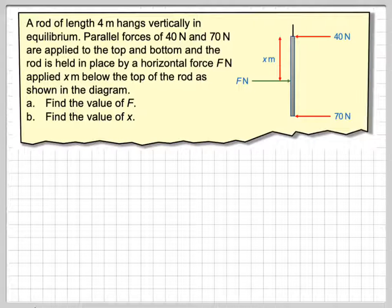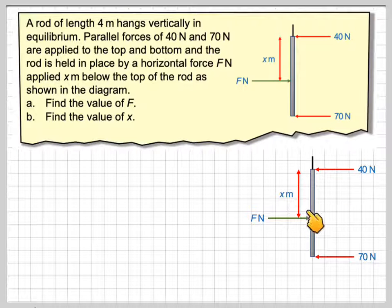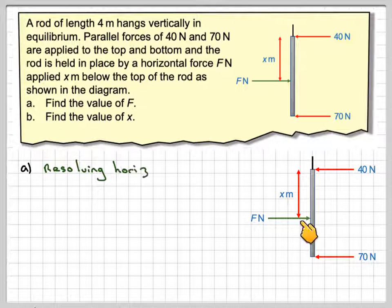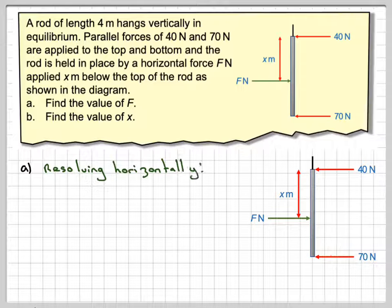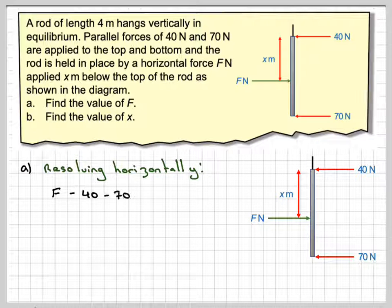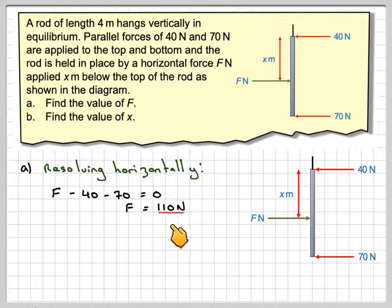If this is in equilibrium, then these forces must balance each other out. So resolving horizontally, we have F minus 40 minus 70 must equal 0, which gives F equals 40 plus 70, which is 110 newtons.